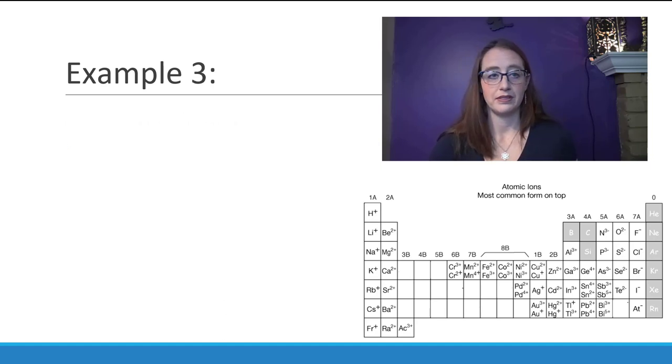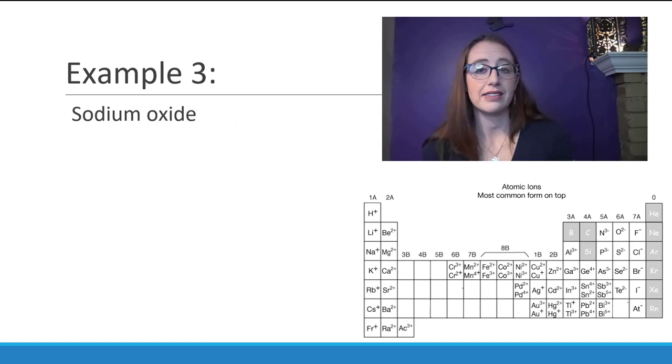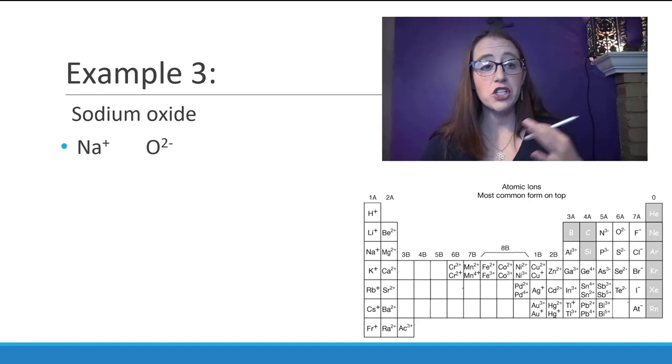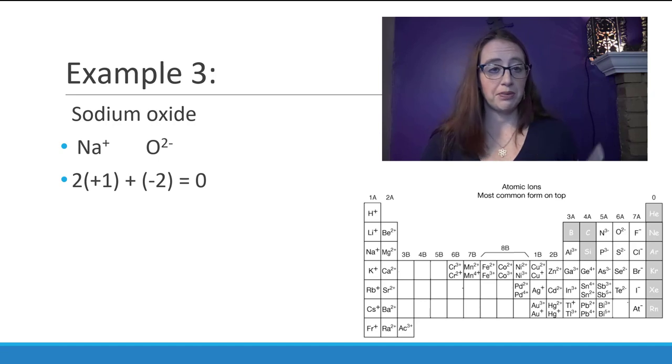Let's do another example, sodium oxide. See if you can do this one. Come back when you're ready. So for this one we need to balance the charges and make them equal to zero just like we did for our other ones. So to do this we're going to need to have two of the plus one charges to balance out the negative two. So two plus ones plus a negative two, or in other words two sodiums to every one oxygen.